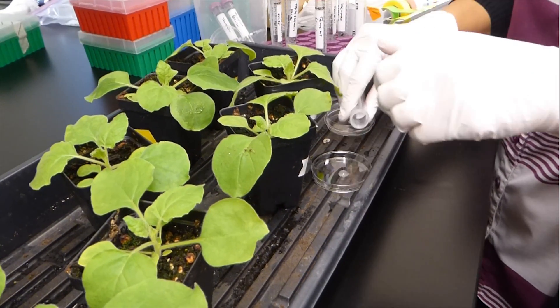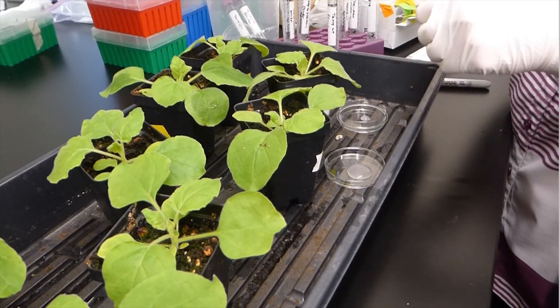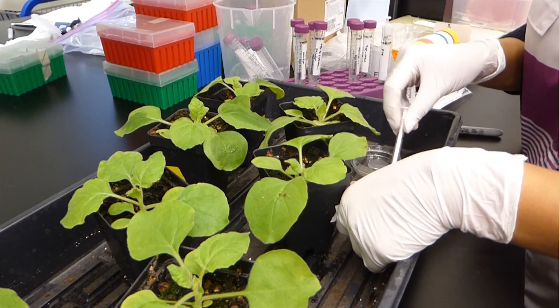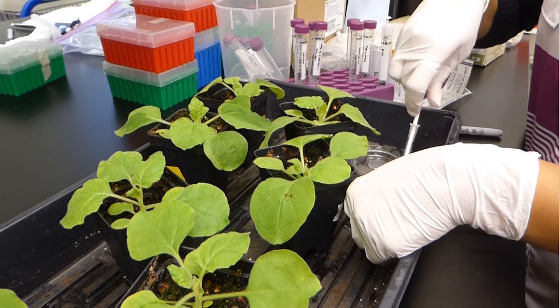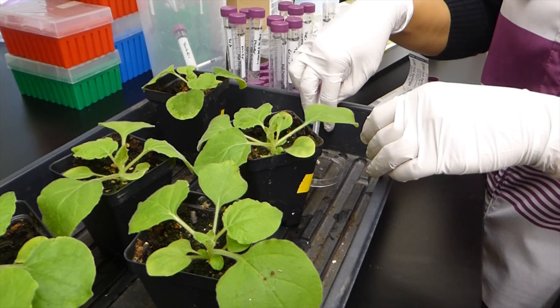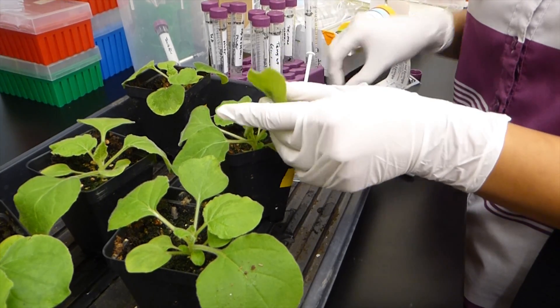Let's see agroinfiltration in action. First, we take our agrobacterium cells with our gene of interest and fluorescent marker. We can express one, two, or even three genes at a time to see how they interact.